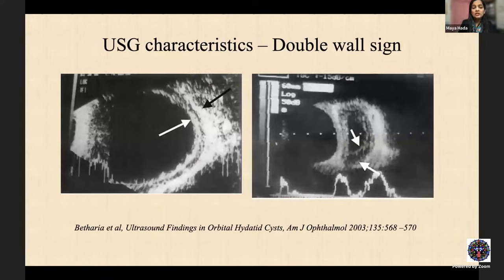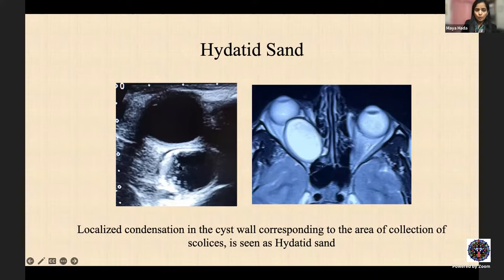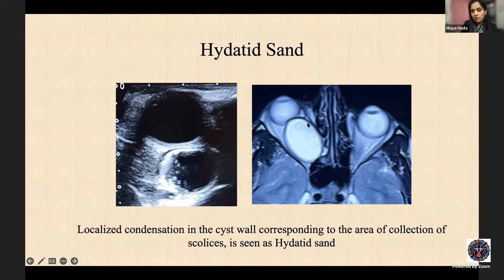The hydatid cyst grows 1.5 cm per year in the orbit and can cause massive proptosis. Its structure has three layers: outermost pericyst (host connective tissue condensation), middle laminated membrane (ectocyst), and innermost germinal layer which forms brood capsules containing scolices that separate to form daughter cysts in aging cysts. On ultrasound, the 'double wall sign' (described by Dr. Betharia) shows the inner germinal layer separated by a clear zone from the outer hyperechoic laminated layer. 'Hydatid sand' — echogenic dots from scolices attached to the cyst wall — is also seen. CT and MRI show cyst content absorption values similar to vitreous or CSF, no contrast enhancement, and collections of scolices along the cyst wall.